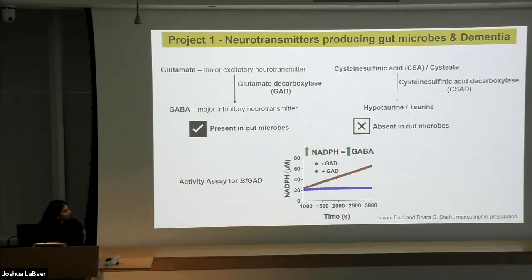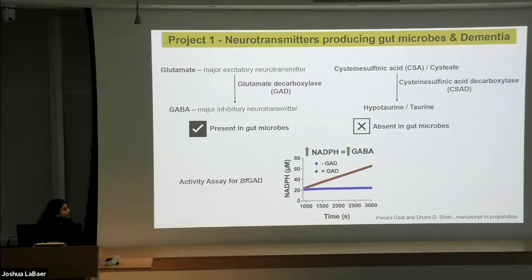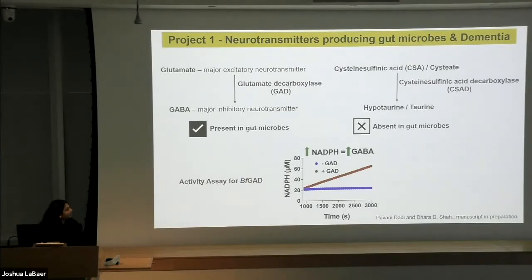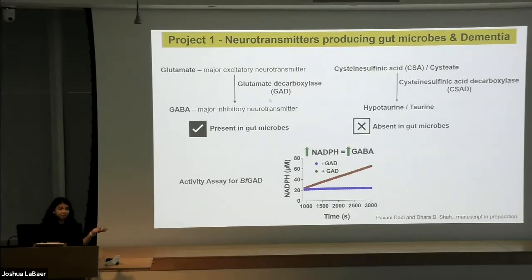Another molecule I mentioned is taurine, which can also act as a neurotransmitter. It takes the same pathway that GABA takes, so having both of them together can have nice combinatorial effects. What we found is that we did not see any protein that looked like the enzyme which makes taurine in any of the gut microbes. Our hypothesis is: since both these reactions are chemically and mechanistically very similar, does glutamate decarboxylase from gut bacteria also make taurine in addition to making GABA? This is what we are currently in the process of figuring out.